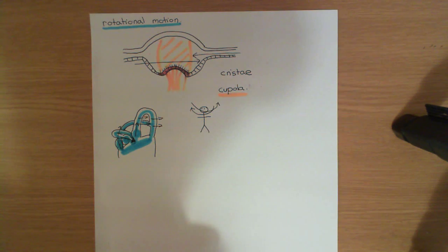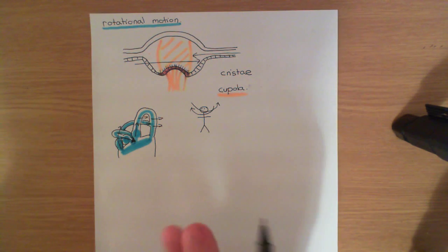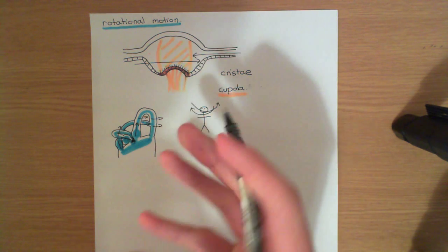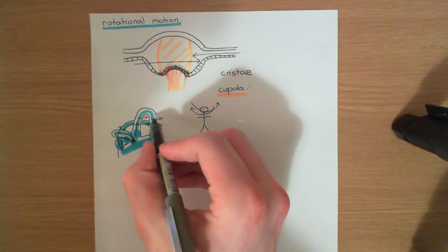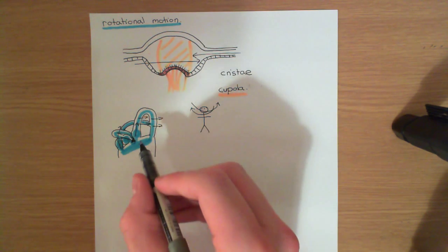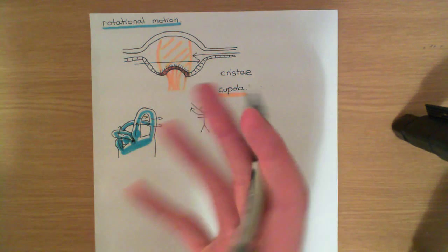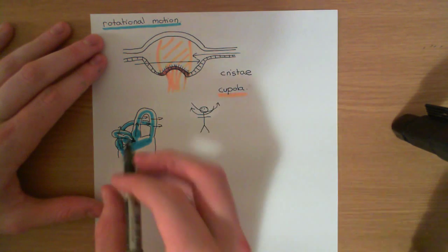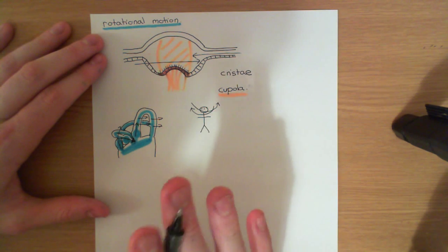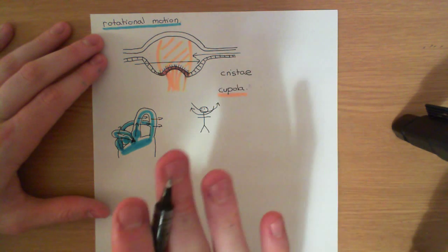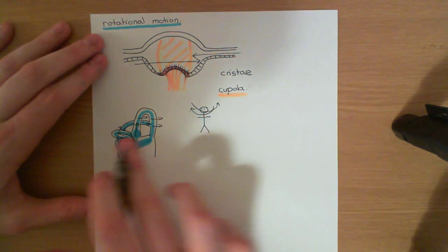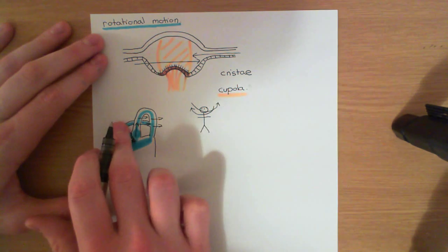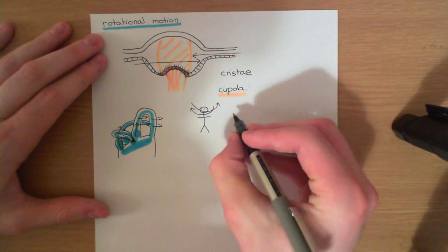That's a taster of how these semicircular ducts work. The anterior and the posterior ones will detect rotational movement in different planes — these will transduce information about rotating your head backwards and forwards in certain planes, and we'll come to this in more detail. Before we do, let's draw a mirror image, because I now want to include the other side. The semicircular ducts work in pairs: the horizontal one works with the other horizontal one; the anterior one here works with the posterior one on the other side; the posterior one here works with the anterior one on the other side.